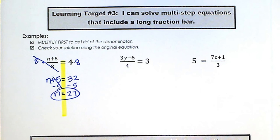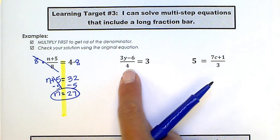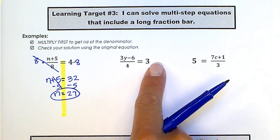Same thing is going to happen. To get rid of this long fraction bar, instead of dividing everything by 4, we're going to multiply the 4 over to this side.